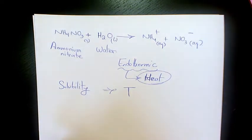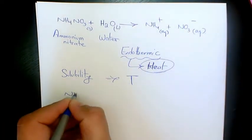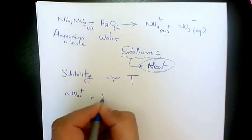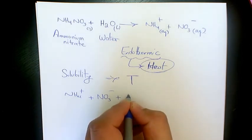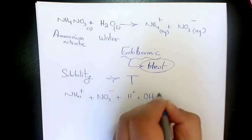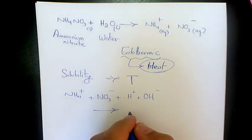When we have NH4+ plus NO3- and we have water dissociated as well, it's going to be H+ and OH-. Then it will produce something like NH4OH.